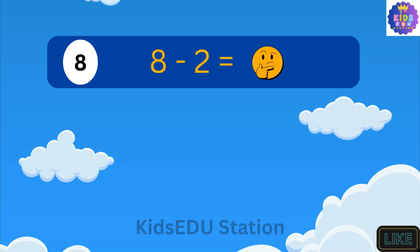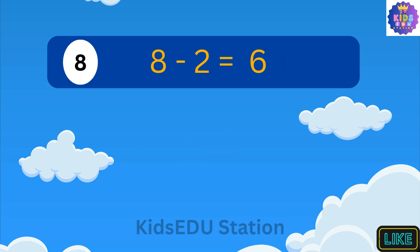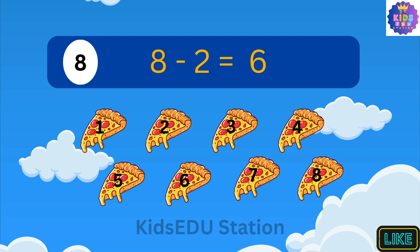What is 8 minus 2? 8 minus 2 is 6. Imagine you have 8 pizza slices. You ate 2 of them. Now you have 1, 2, 3, 4, 5, and 6 pizza slices left.